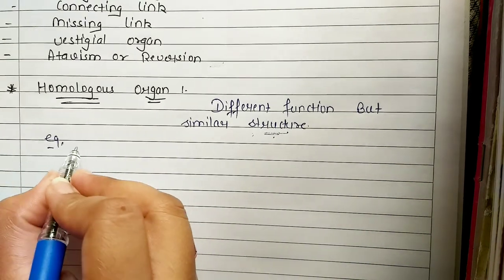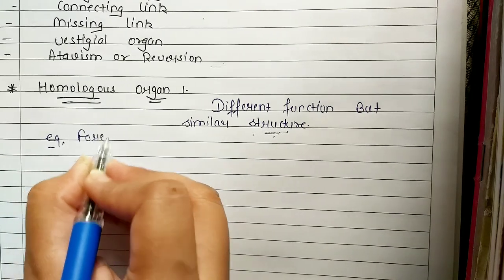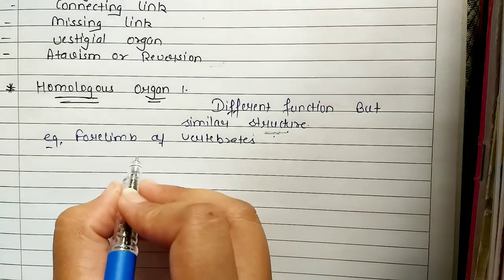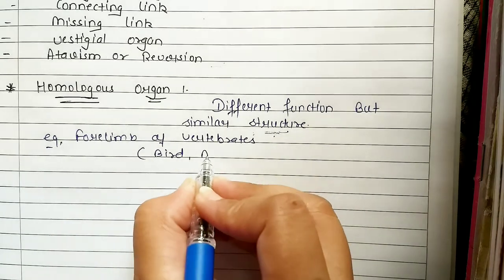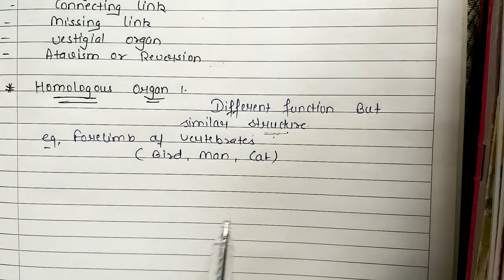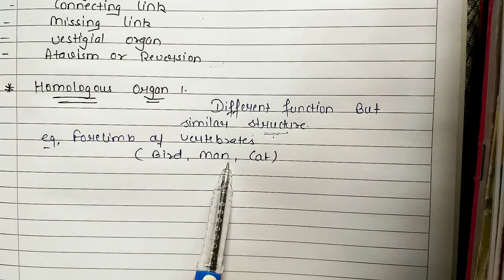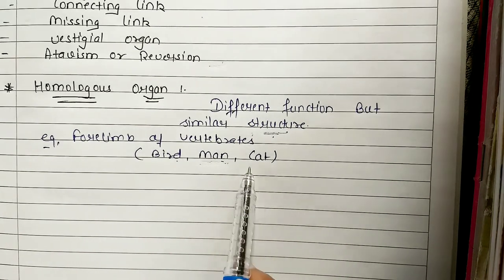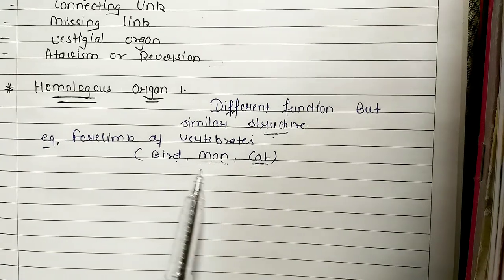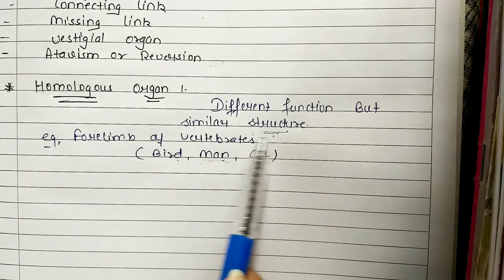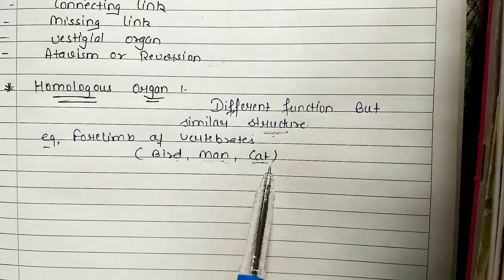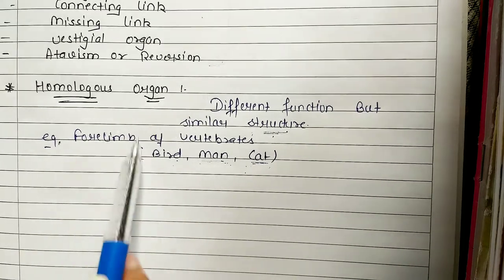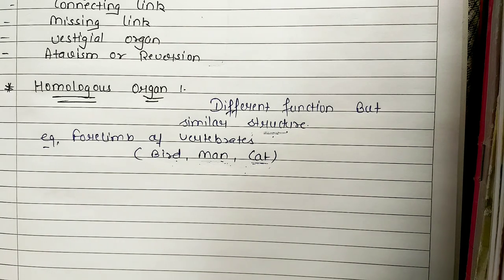The best example is the 4 limbs of vertebrates. Who comes in vertebrates? Birds, animals — bird, man, cats. All of these are vertebrates. Look at the 4 limbs — the function is different. The bird's limbs help in flying, man's 4 limbs are our hands, cat's 4 limbs help in walking. The function is different, but the structure is similar because the origin of the 4 limbs is common. That's why we call them homologous organs.